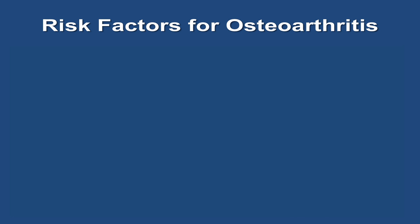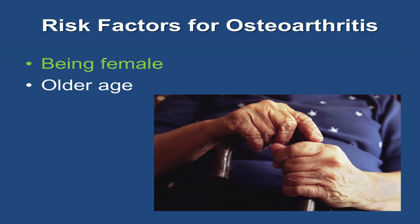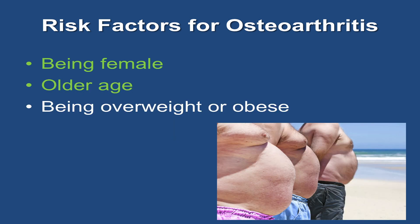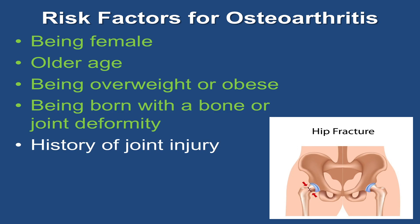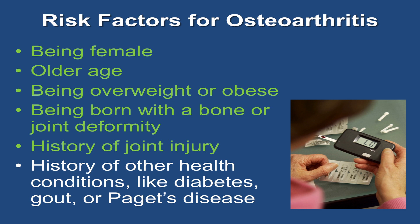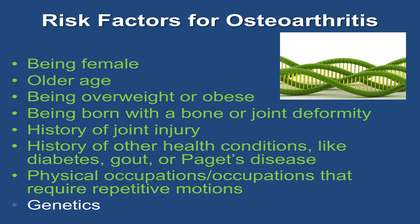Osteoarthritis occurs when the cartilage that cushions the ends of the bones in your joints breaks down over time. Risk factors for developing osteoarthritis include being female, older age, being overweight or obese, being born with a bone or joint deformity, having a history of a joint injury, history of other health conditions like diabetes, gout, or Paget's disease, physical occupations that require repetitive motions, and genetics.